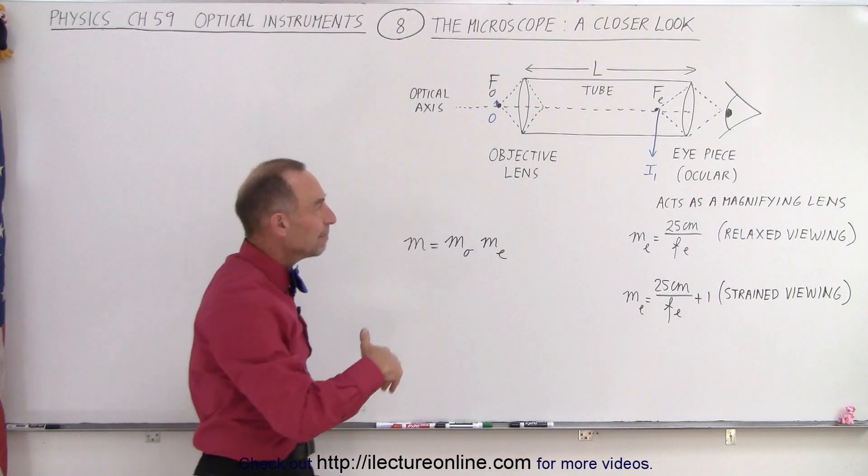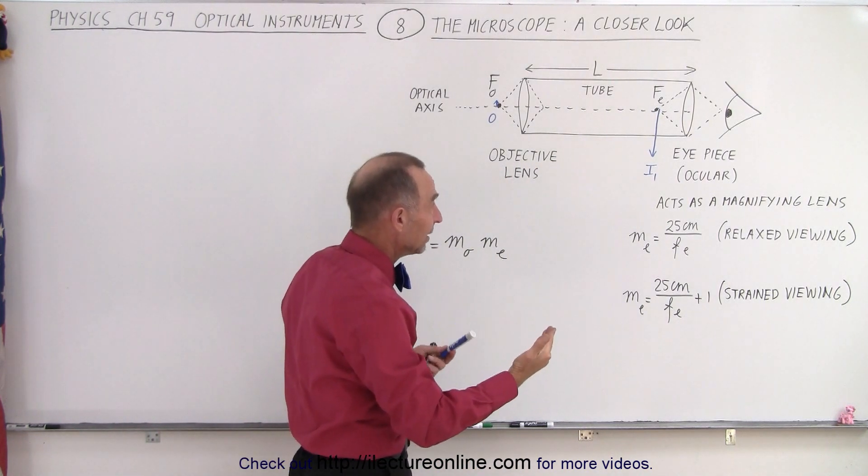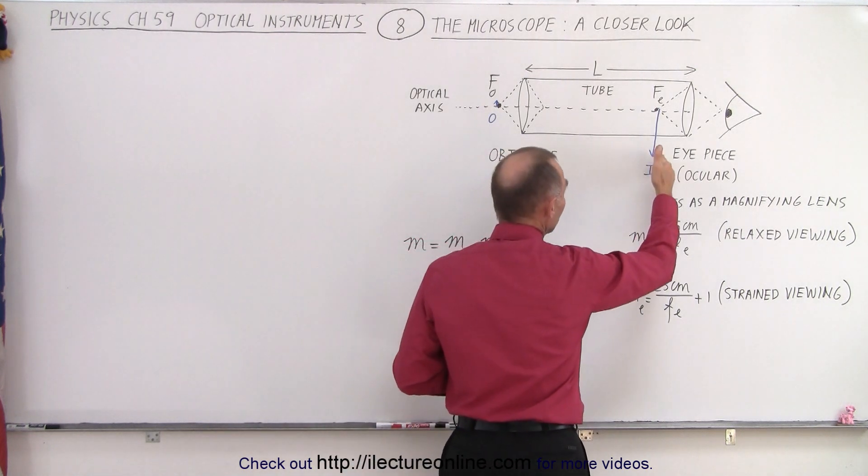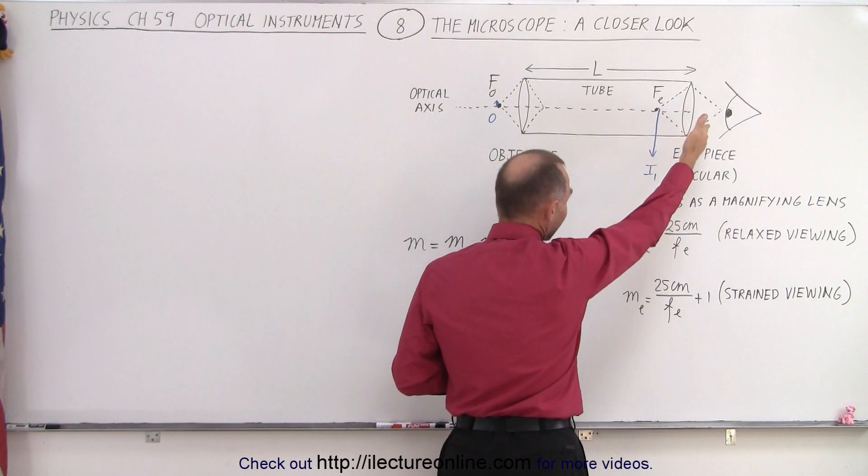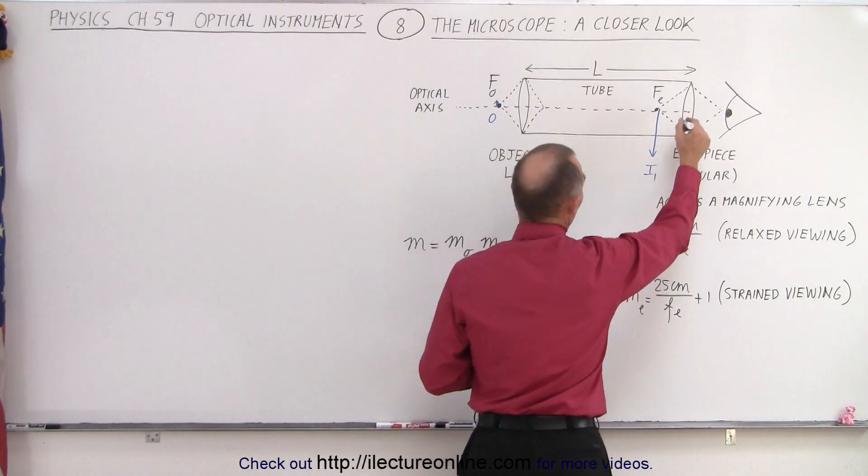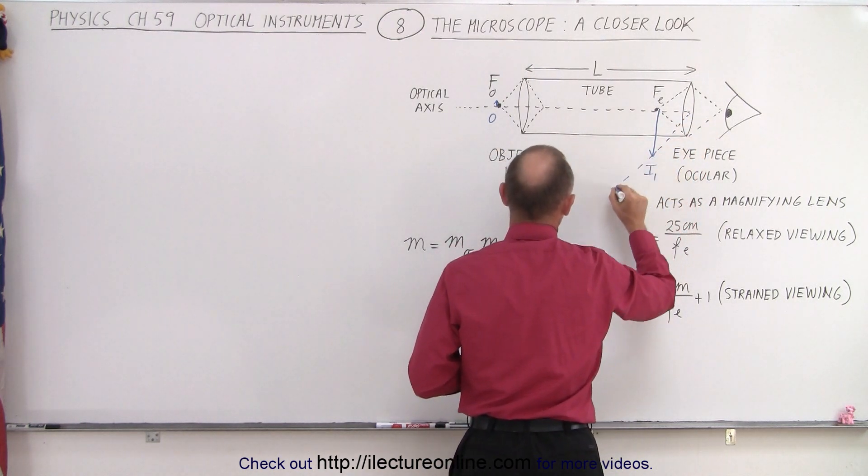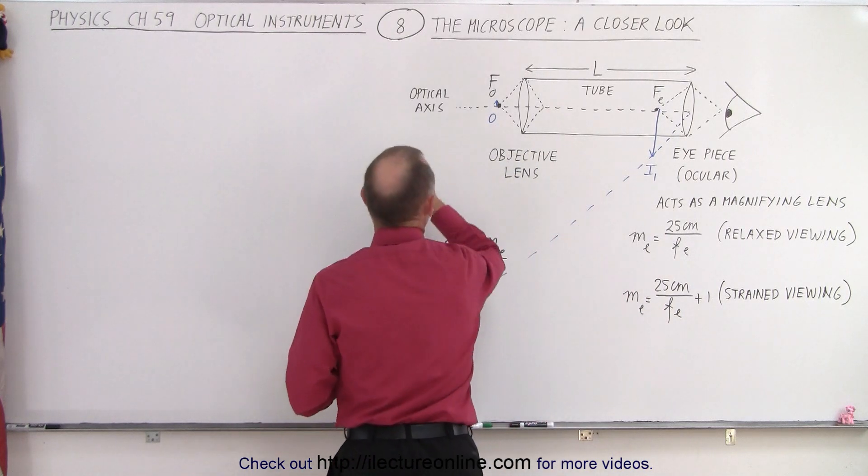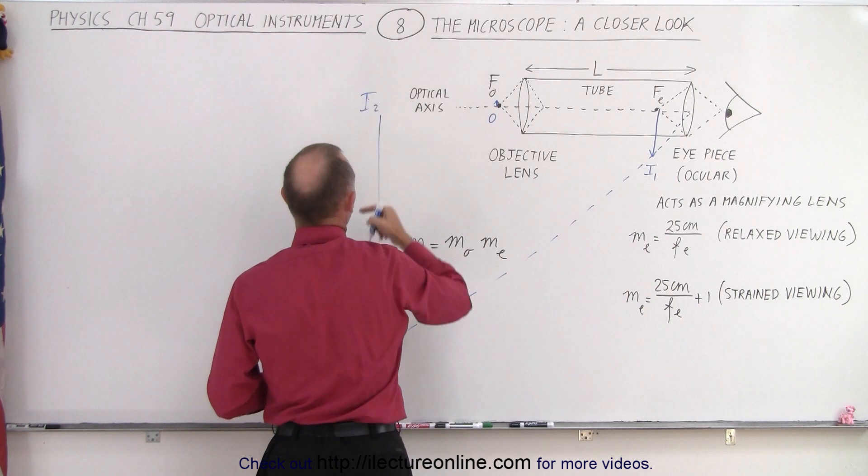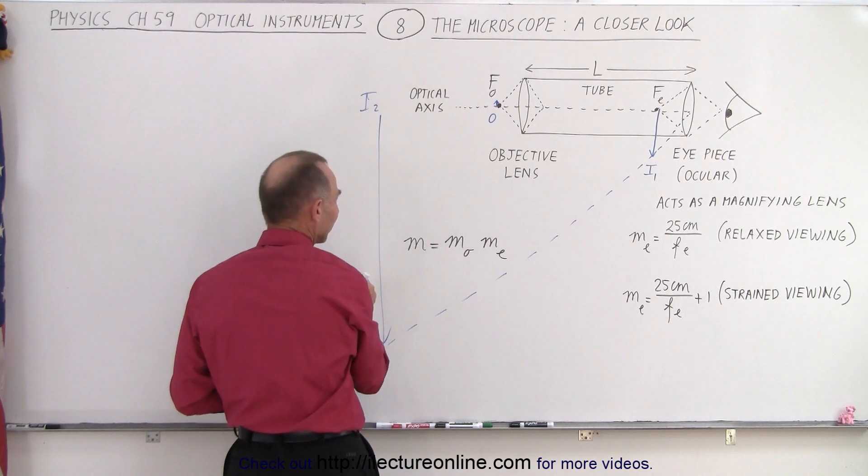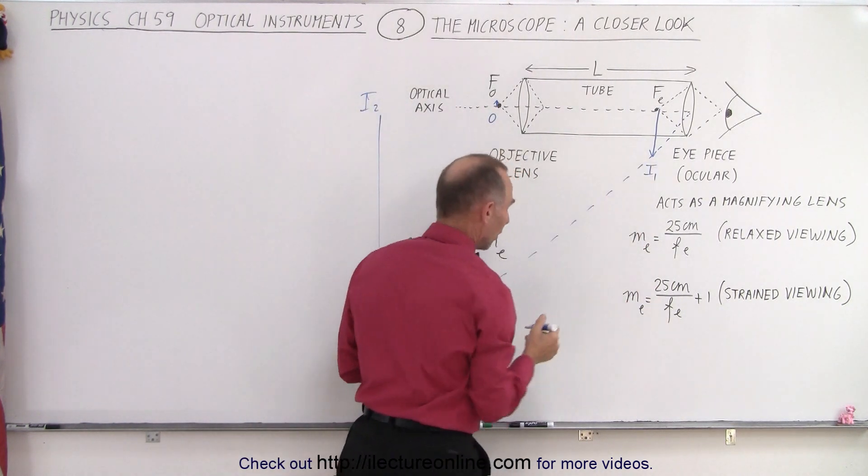And then the magnifying glass does its job by magnifying the image of the first lens now becomes the object of the second lens, essentially. And so now what we do is we're going to have an image formed like so. So this is image two.